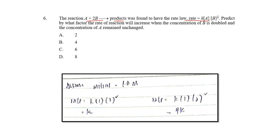Question six: the reaction A + 2B → product has a given rate law. If the concentration of B is doubled while concentration of A remains unchanged, the rate increases by a factor of 2² = 4. So the answer is B: four times.